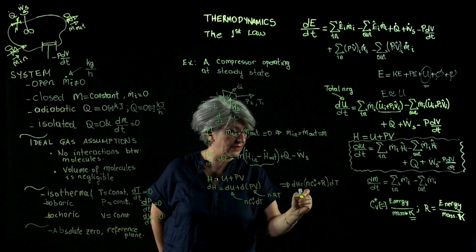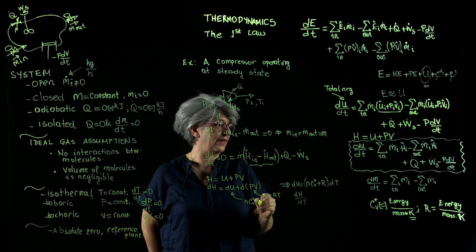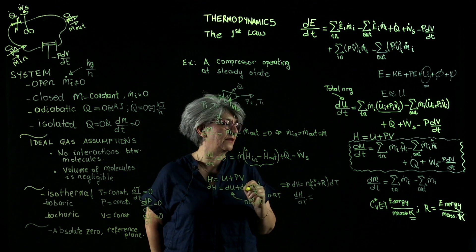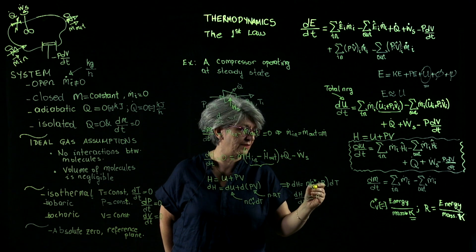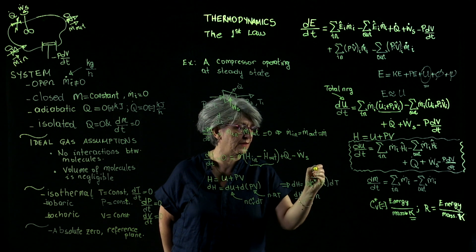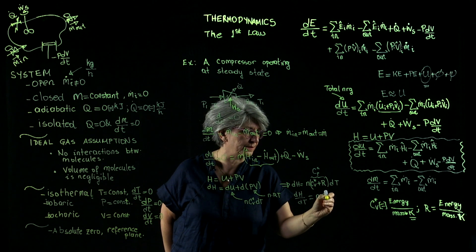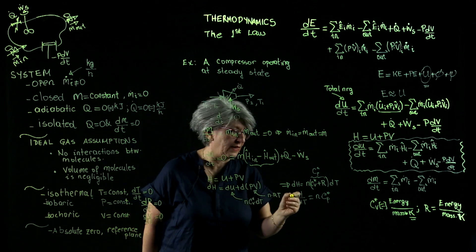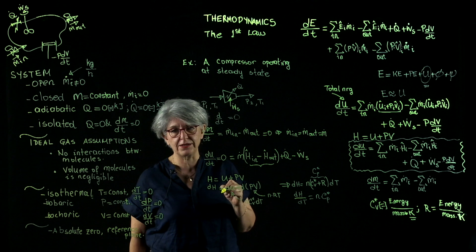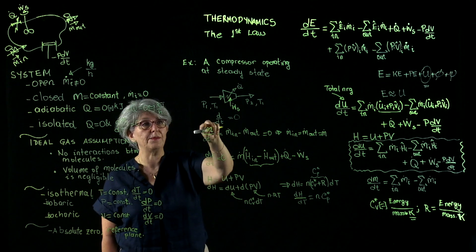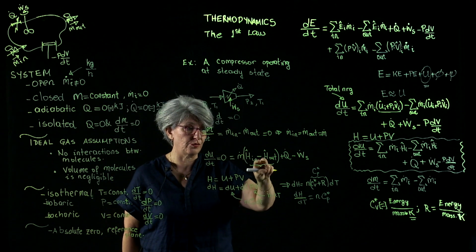So we have dH/dT for an ideal gas equal to n·cp*, where cp* = cv* + R. Therefore dH/dT = n·cp*. Similar to internal energy, the enthalpy of an ideal gas is only a function of temperature. If temperature is constant, h_in and h_out should be equal to one another — so that term vanishes.